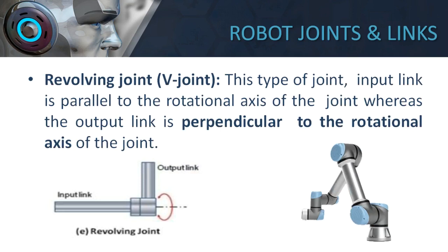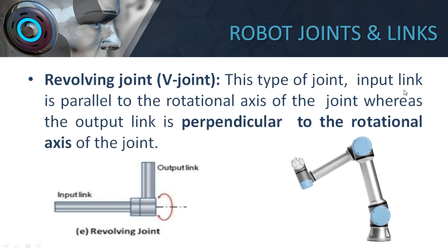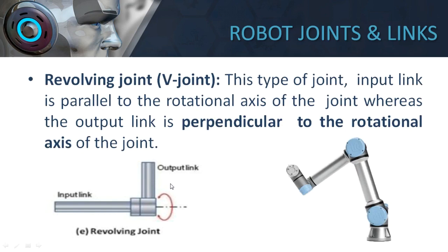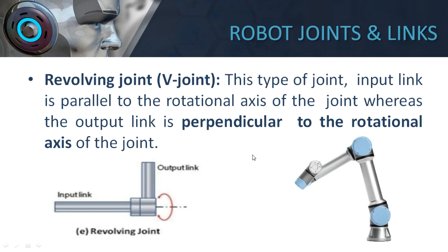The next type of joint is the revolving joint or V-joint. In this type of joint the input link is parallel to the rotational axis of the joint, whereas the output link is perpendicular to the rotational axis. This is vice versa compared to the rotational joint. Unlike the orthogonal joint which gives translational motion, the revolving joint gives the end effector an oscillating motion as seen in the animation.